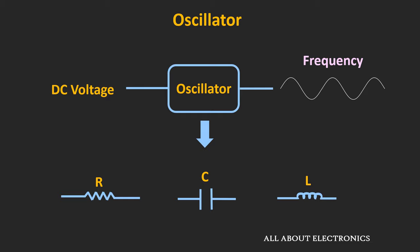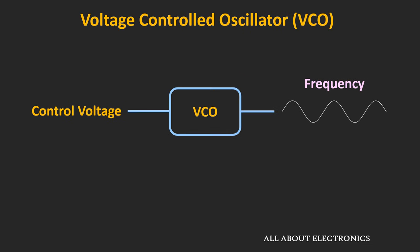In the conventional oscillator, if we want to change the frequency, then we need either a variable resistor or a variable capacitor, and manually we need to tune these components. This Voltage Control Oscillator also needs passive components for frequency generation, but with a given set of passive components, just by changing the control voltage or tuning voltage, it is possible to change the oscillation frequency. So VCOs are much easier to tune compared to conventional oscillators.